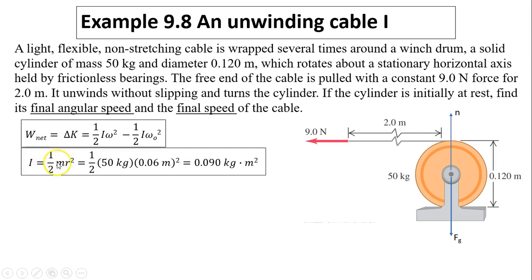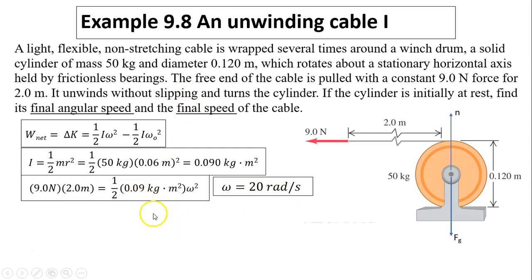Let's find I first. I equals 1/2 mR squared. How do I know this? From the chart. This is a disk. Solid disk is 1/2 mR squared. R is 0.06 because 0.12 is diameter. So you get 0.09 kilogram-meters squared. Substitute in: force times distance equals 1/2 I omega squared. You will have omega. Now what is the speed? How is speed related to omega? Speed equals R times omega. So that gives you 1.2 meters per second.